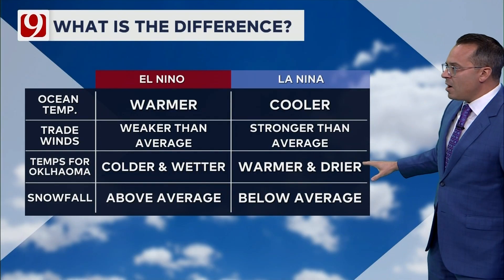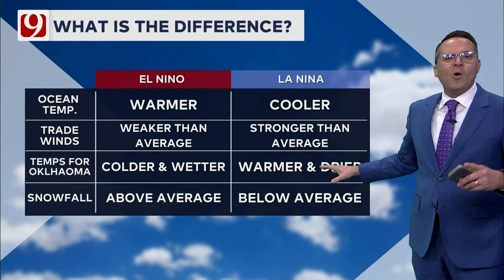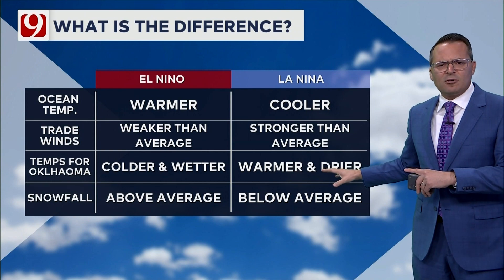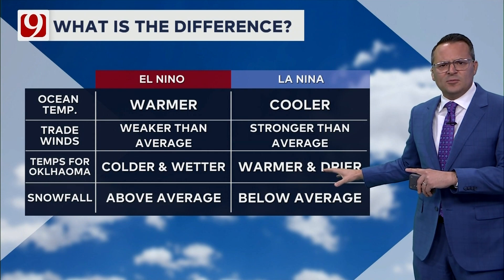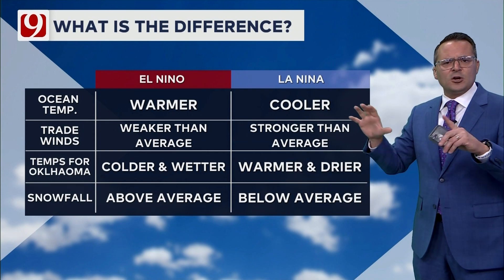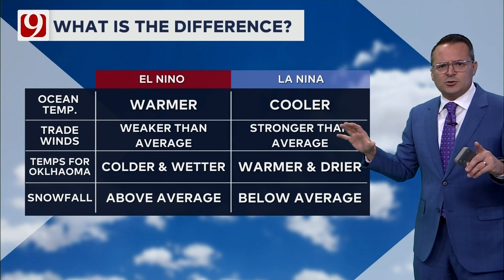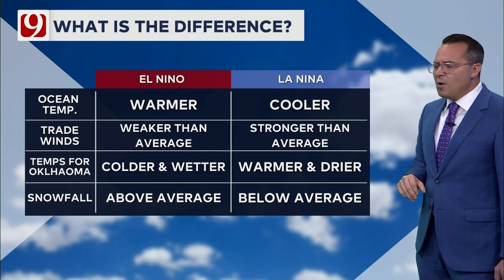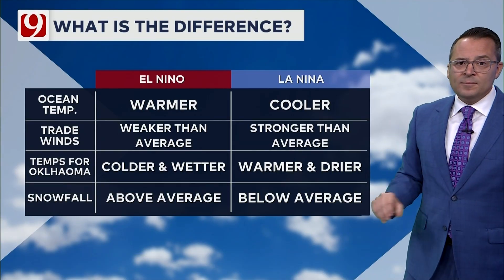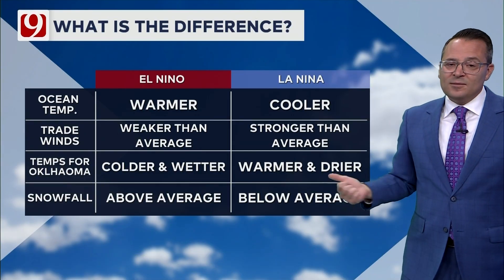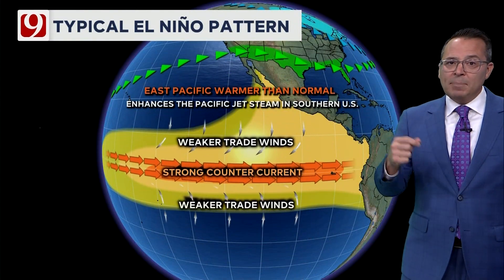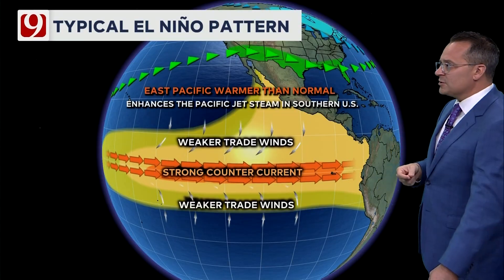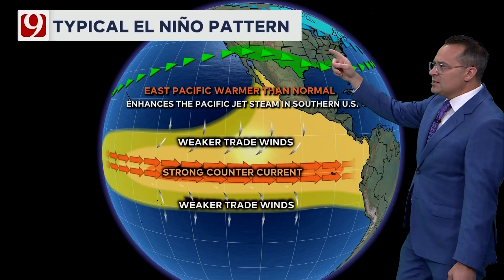With La Niña it's warmer and drier because of the jet stream configuration. Weather systems don't usually come in across the southern plains, so generally we deal with warmer and drier weather, and it would produce below average snowfall.